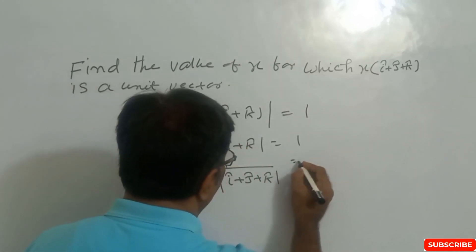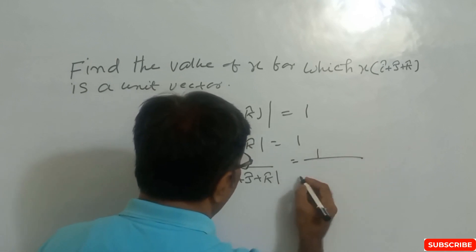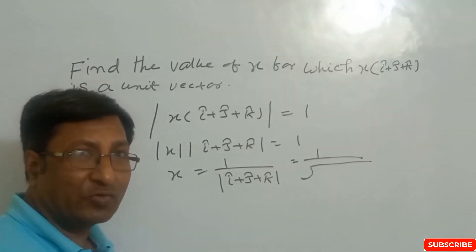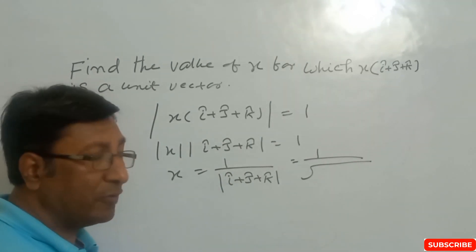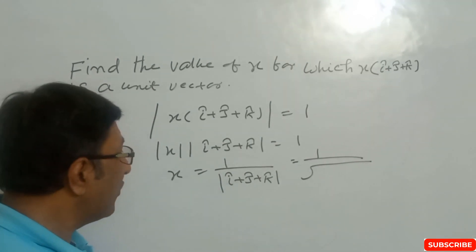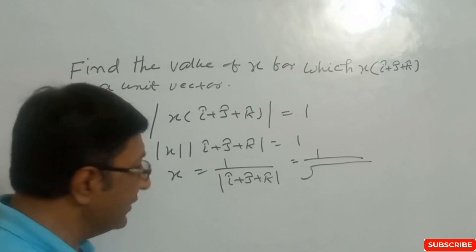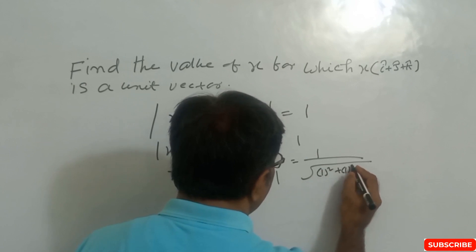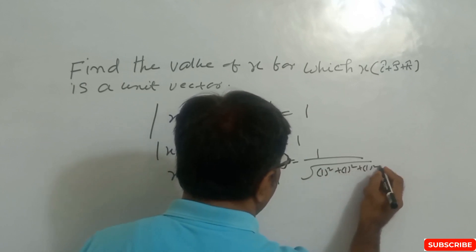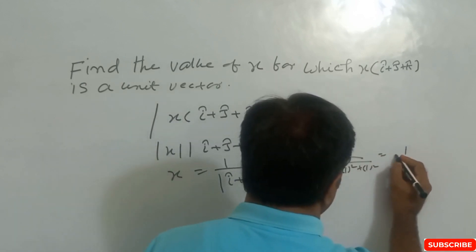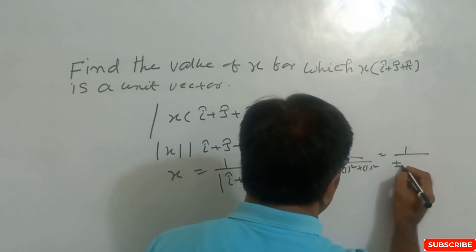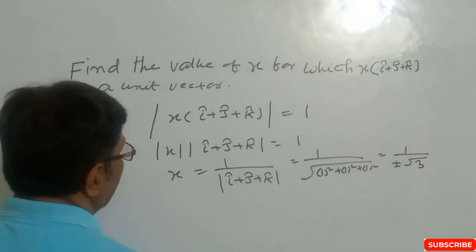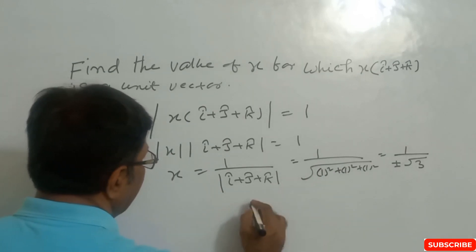The magnitude is the square root of the sum of squares of the coefficients of î, ĵ, and k̂. So this is the square root of (1² + 1² + 1²). Therefore x equals plus or minus 1 by root 3, which is the answer.